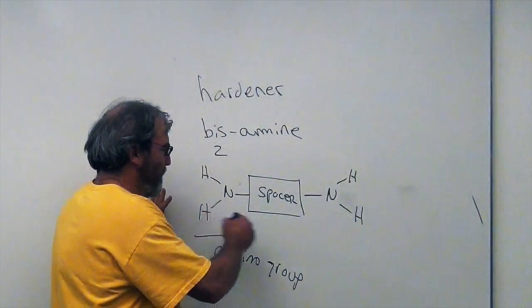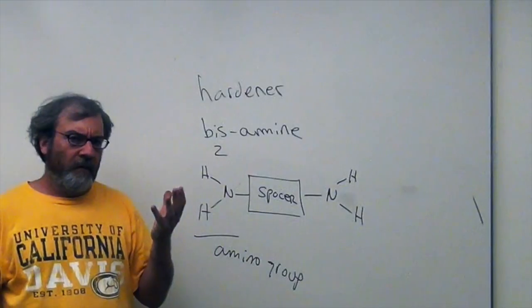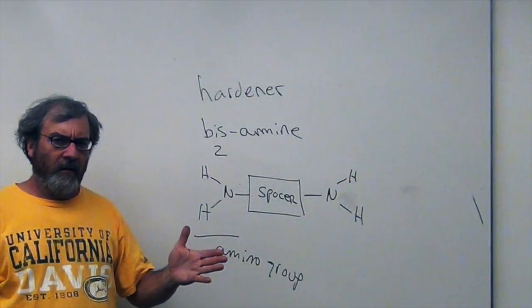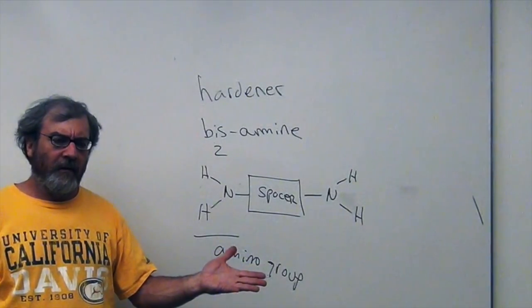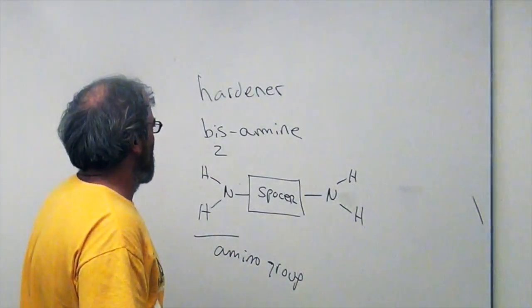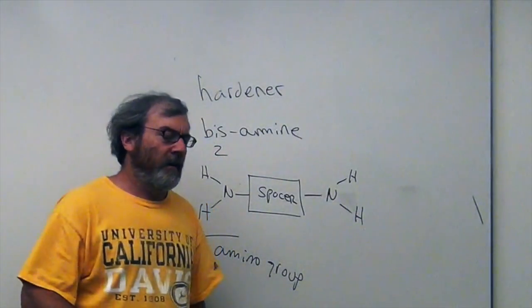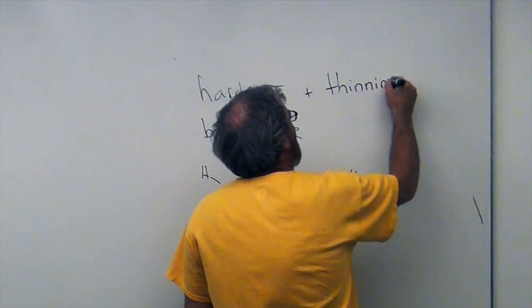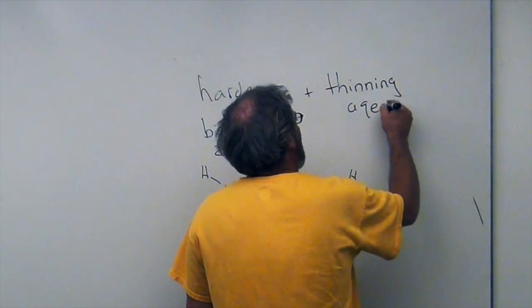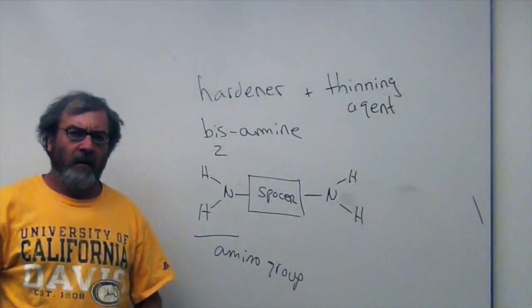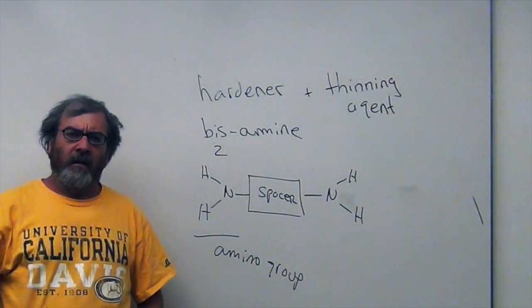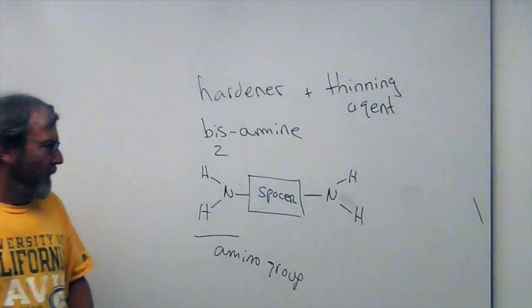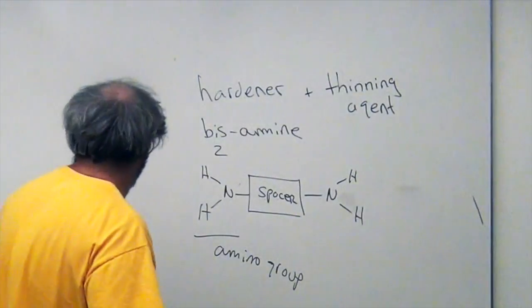Now, the bis-amine, which is a liquid, it tends to be pretty viscous. And it makes it difficult to spread the mixture onto a fiberglass cloth to glass a surfboard. So the hardener is almost always mixed with a thinning agent. And Resin Research uses an organic solvent that they mix with the bis-amine to make it thinner, less viscous.